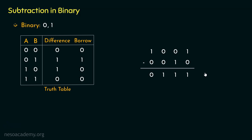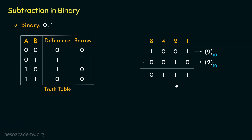Let's verify whether our subtraction was correct. Since all these are 4-bit numbers, the place values are 2 to the power 0 (1), 2 to the power 1 (2), 2 squared (4), and 2 cubed (8). For the minuend 1001: 8 plus 1 equals 9 in decimal. The subtrahend 0010 is 2 in decimal. From 9 minus 2 we should get 7. Checking the result 0111: 4 plus 2 plus 1 equals 7. Our subtraction was correct.